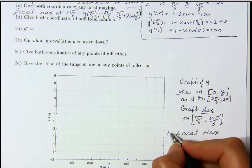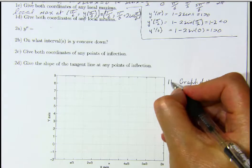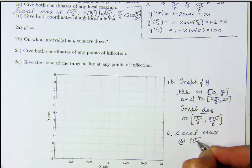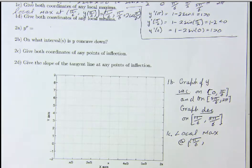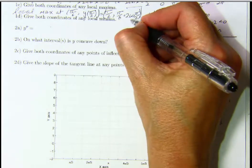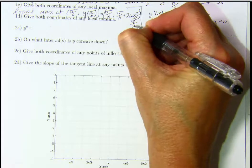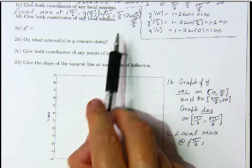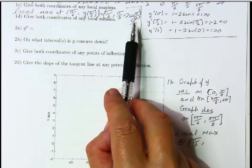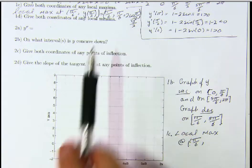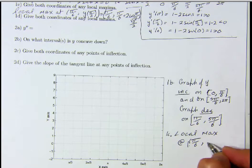The local maximum is at x = π/6. Cosine(π/6) is √3/2, so the second coordinate is π/6 plus √3, which is approximately equal to 2.25.